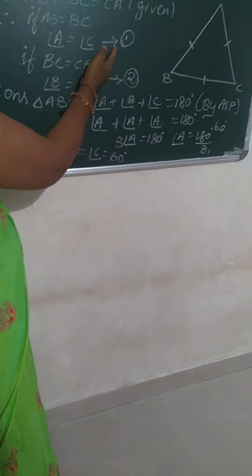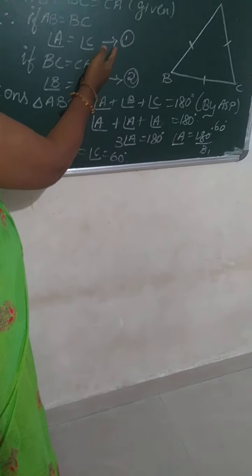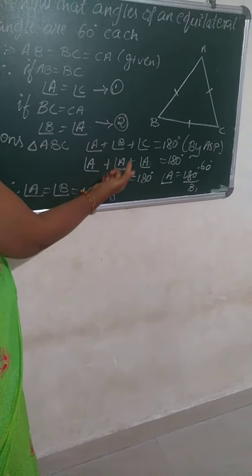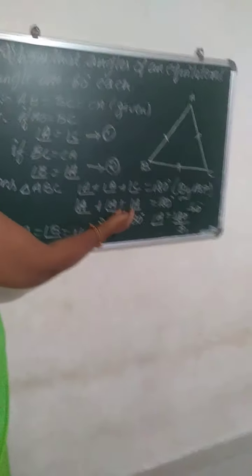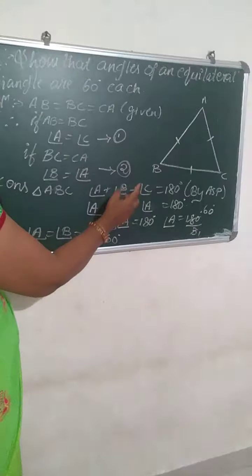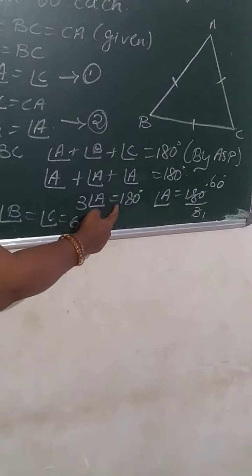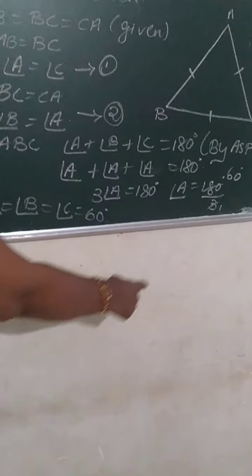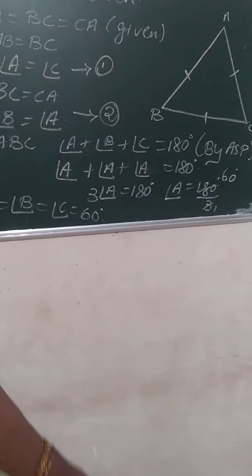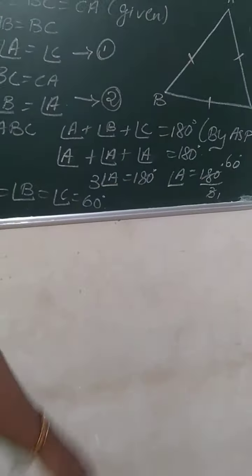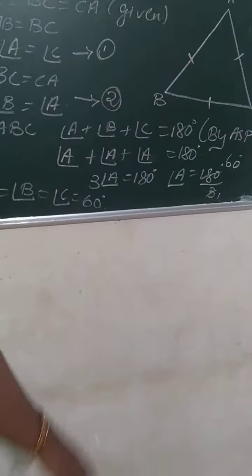Now I am going to replace all the other angles by angle A. Why? Because in one I have said angle A equals angle C. Similarly C will be equal to A, so I can replace C by A. And here I can replace B by A. Hence angle A as it is, B I have replaced with A, and C I have replaced with A. How many A's are there? There are three A's, hence 3A equals 180 degrees.